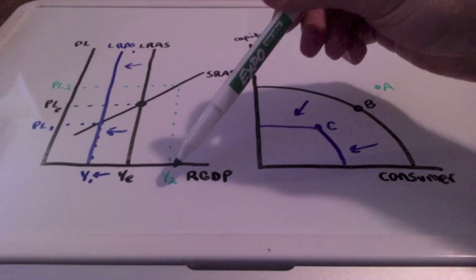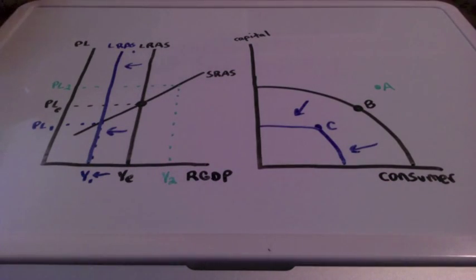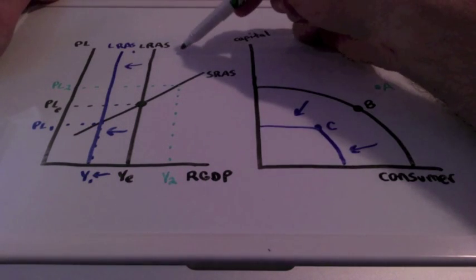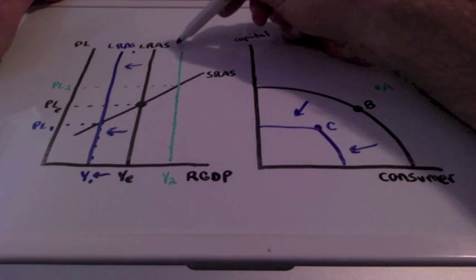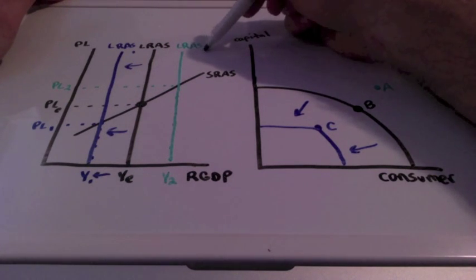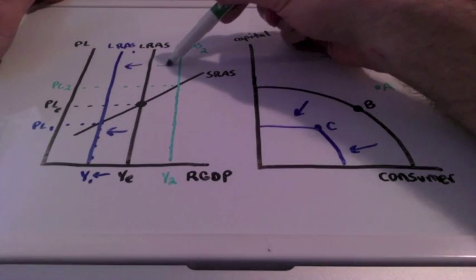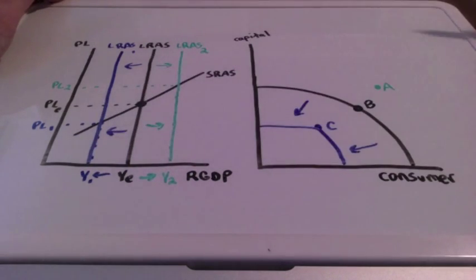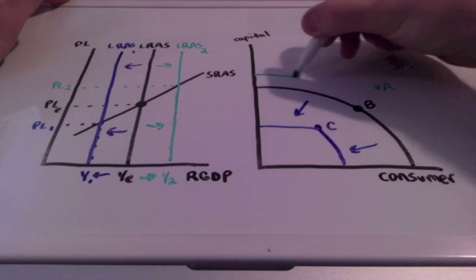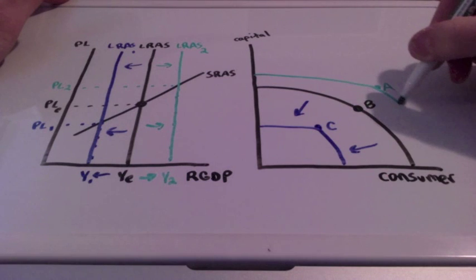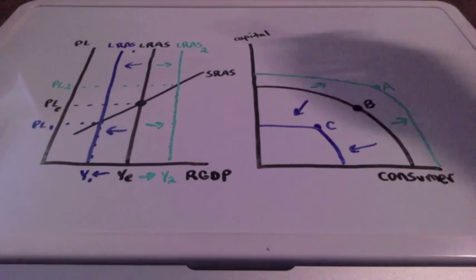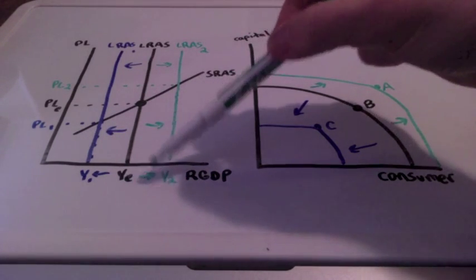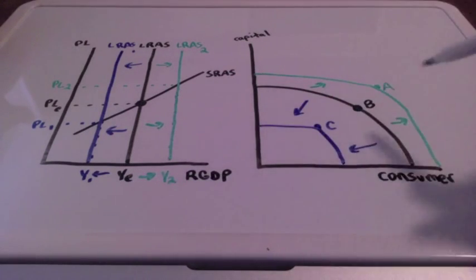If price level 2 and GDP 2 become a permanent new change in society with permanently new resources, our long run aggregate supply curve would move to the right — not just a short run change, but a permanent long run change — creating long run aggregate supply curve 2. GDP is moving to the right, and the production possibilities curve is moving outward to point A. Both capital and consumer goods are increasing, as a result of an increase in long run aggregate supply, a permanent change in resources.